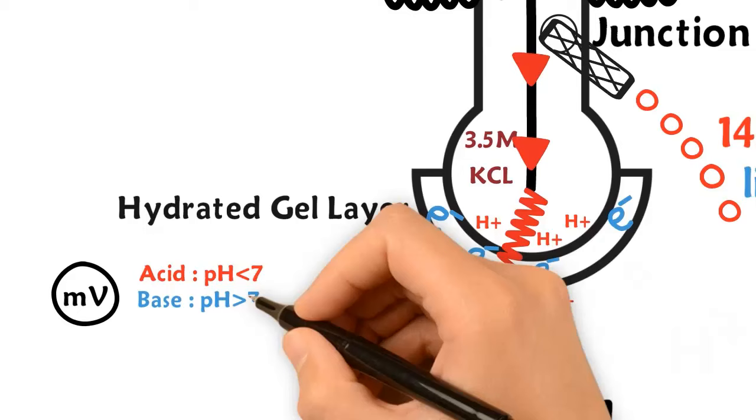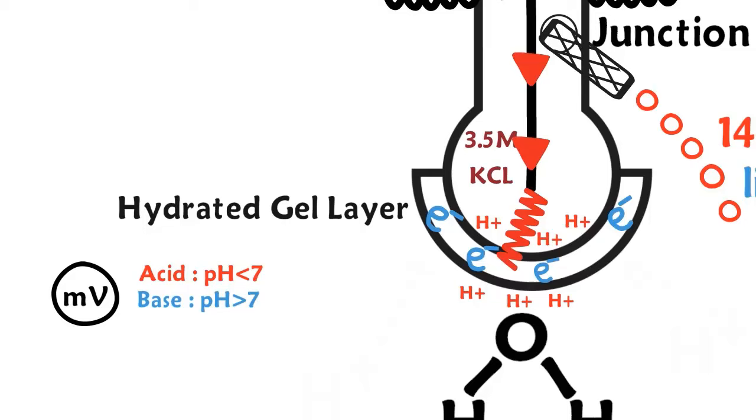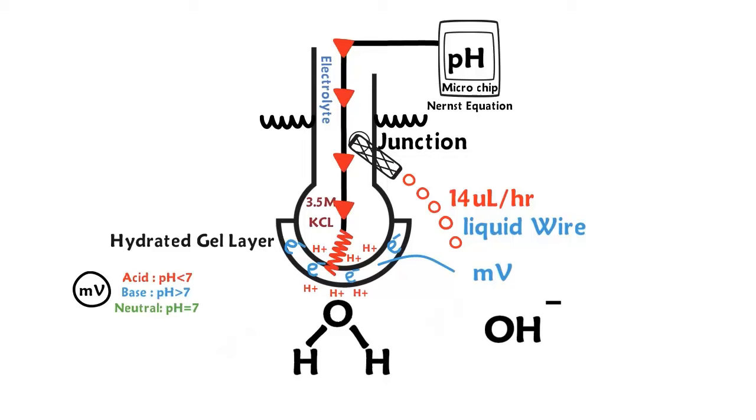Equal hydrogen ions on both sides of the gel layer and glass bulb will create a neutral pH value. This is created by a millivolt charge close to zero. Based on the number of hydrogen ions in this example, we would expect about an 8 millivolt charge.